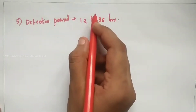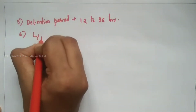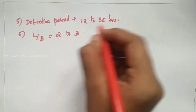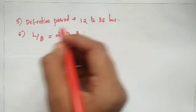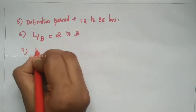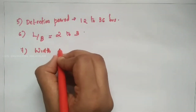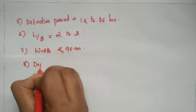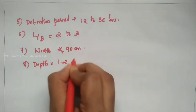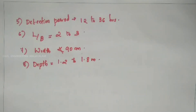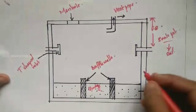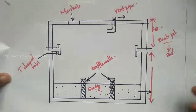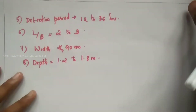The sixth consideration is the L by B ratio — length to breadth — which should be 2 to 3. The width of the settling tank should not be less than 90 cm. The depth of the tank is 1.2 to 1.8 meters, plus the freeboard.